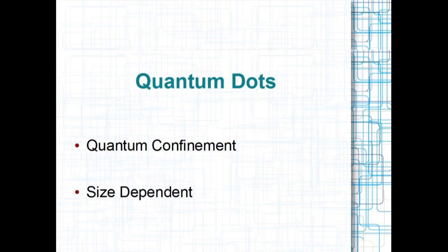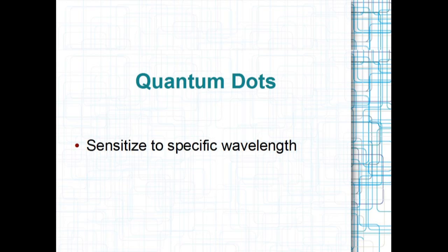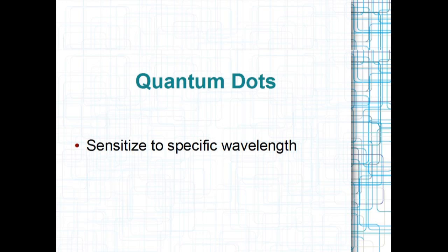To use quantum dots in solar cells, we want to capture the excited electrons before they can recombine and emit a photon. Then we can use electrons to do the work. The reason we want to use quantum dots is to sensitize the solar cell to a specific wavelength of light. If we can attach quantum dots to larger semiconductor structures, we can transmit the excited electrons from the quantum dots into the bulk semiconductor. Then the device will be absorbing wavelengths of light corresponding to both the bulk semiconductor and the quantum dots.